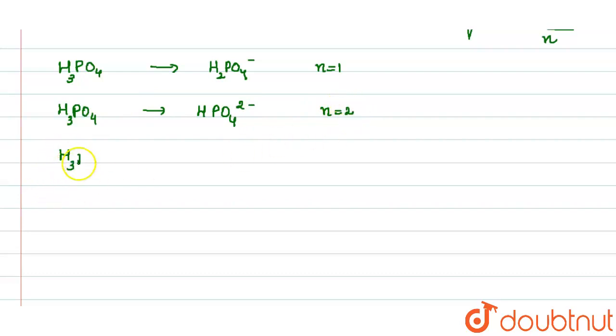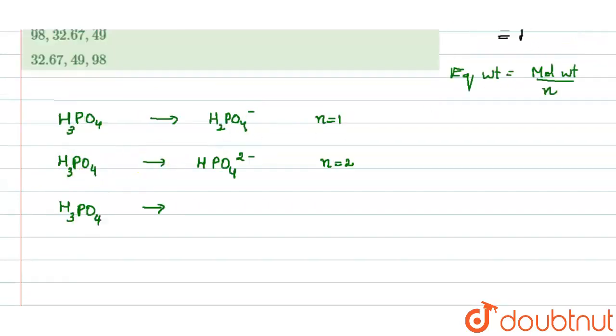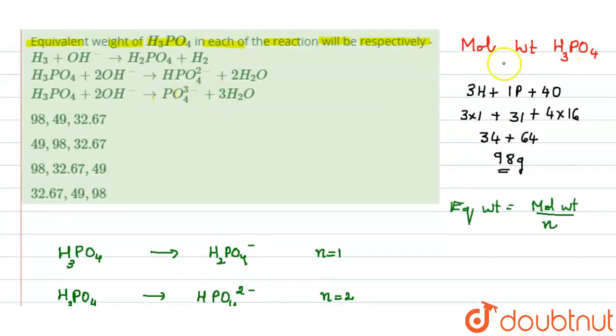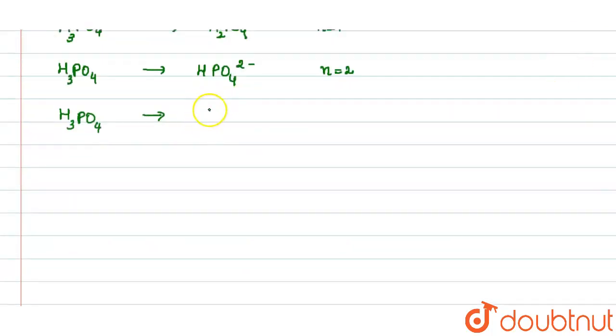So in the last case it is H3PO4, but at the end the product will be PO4 3 minus. So all the three hydrogens are removed here, so n factor in this case is 3.